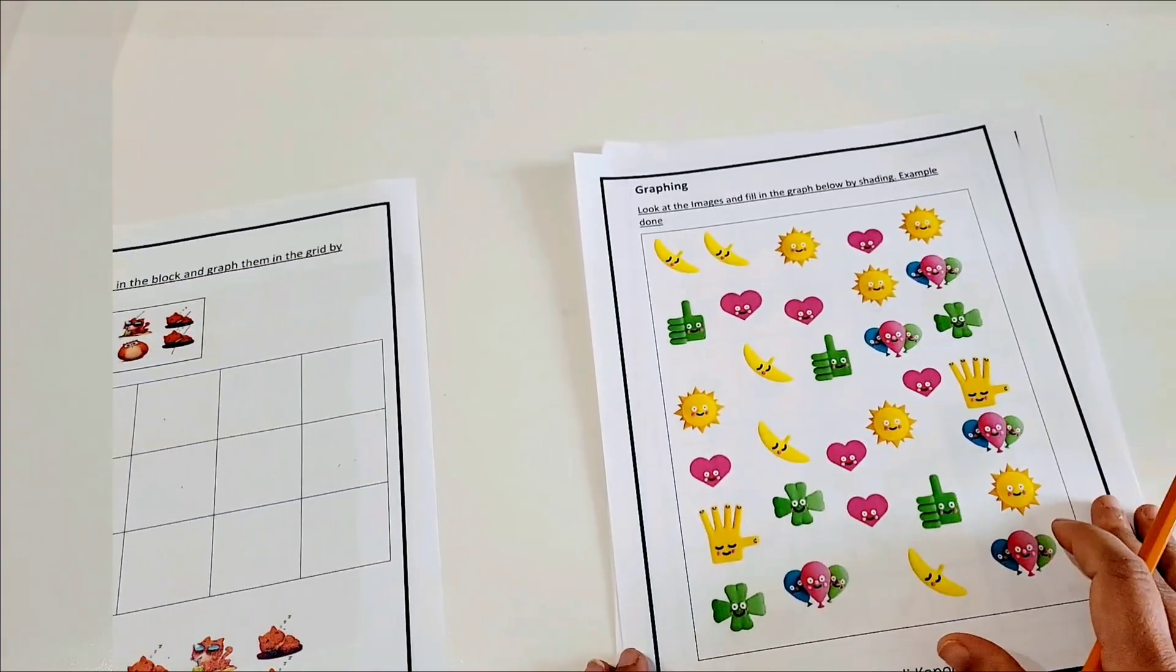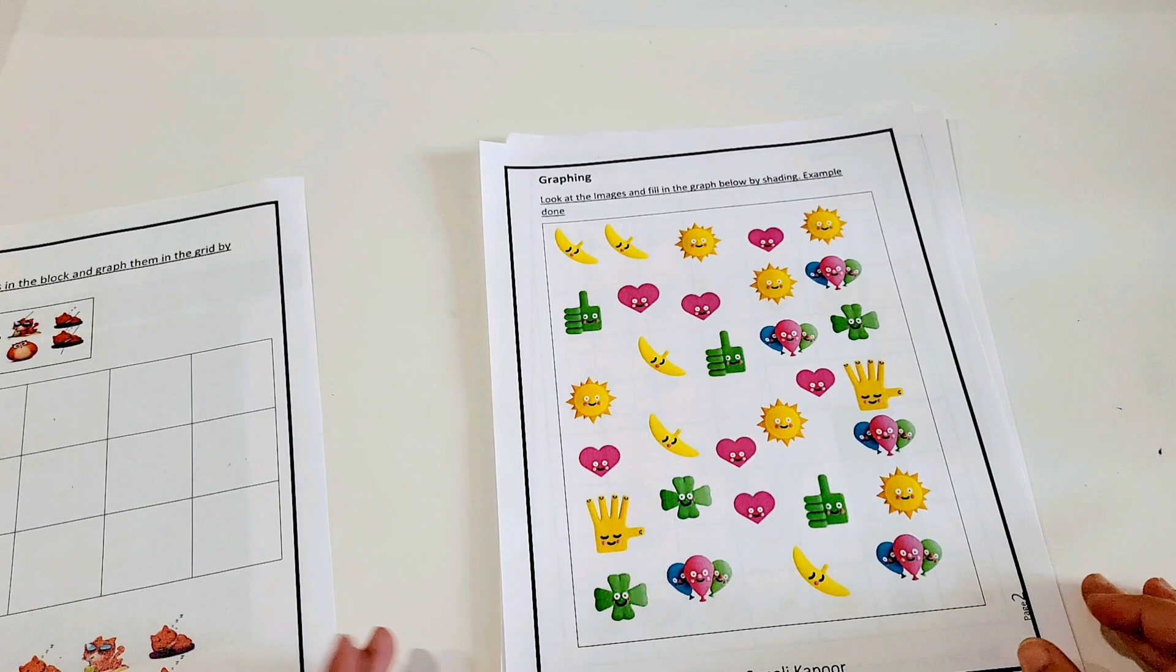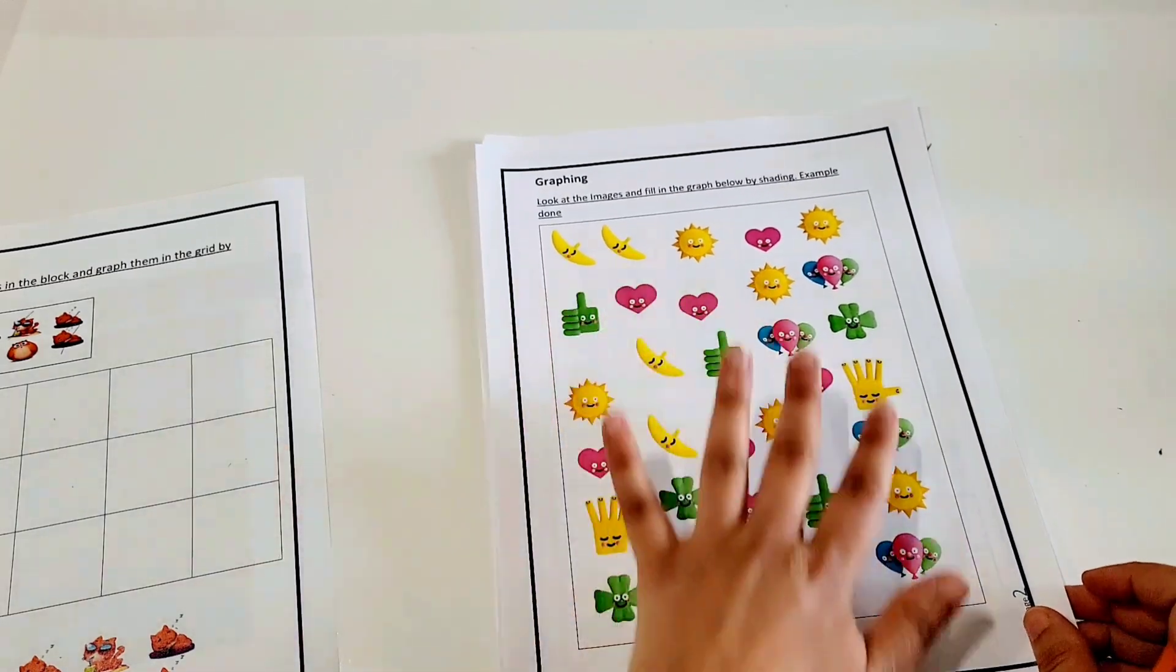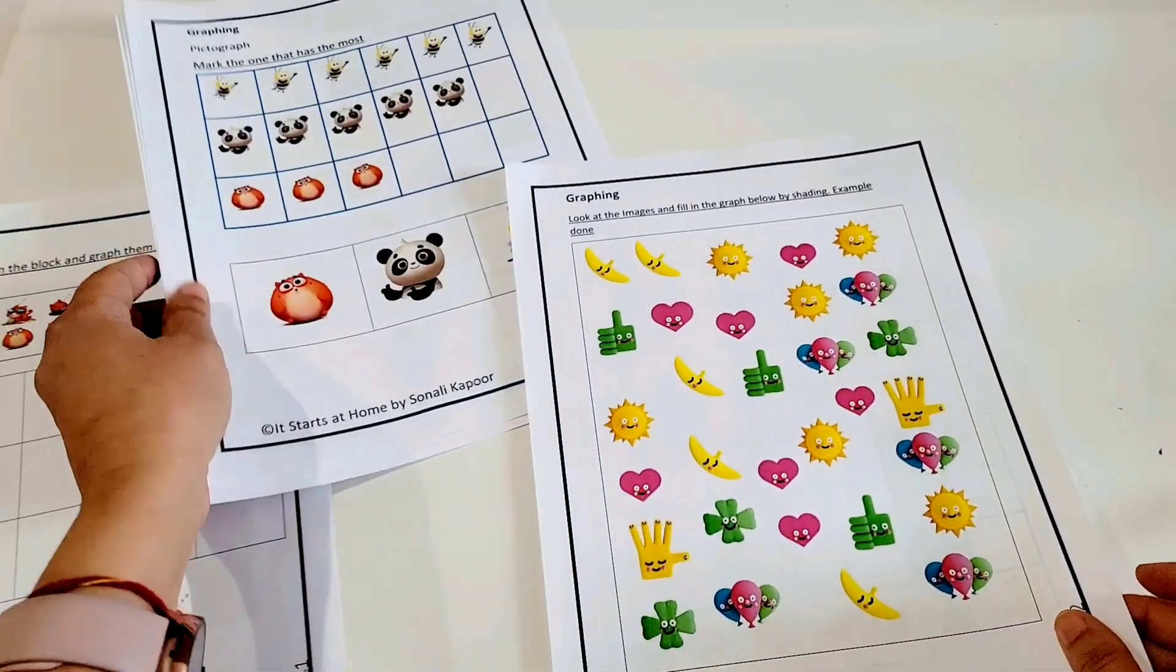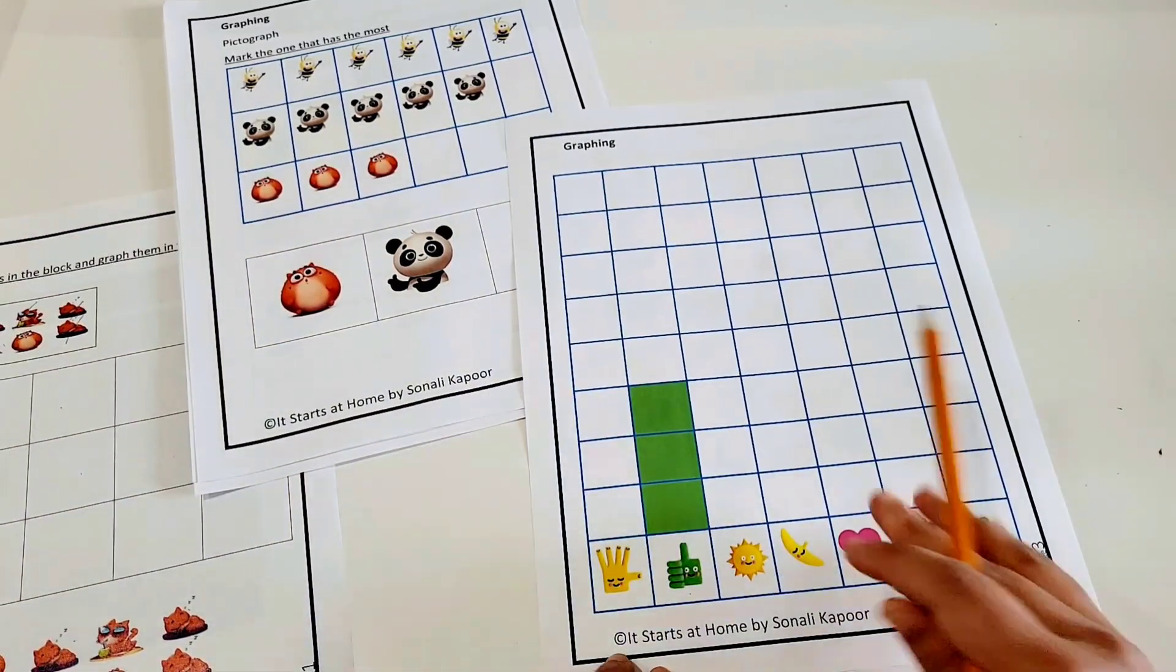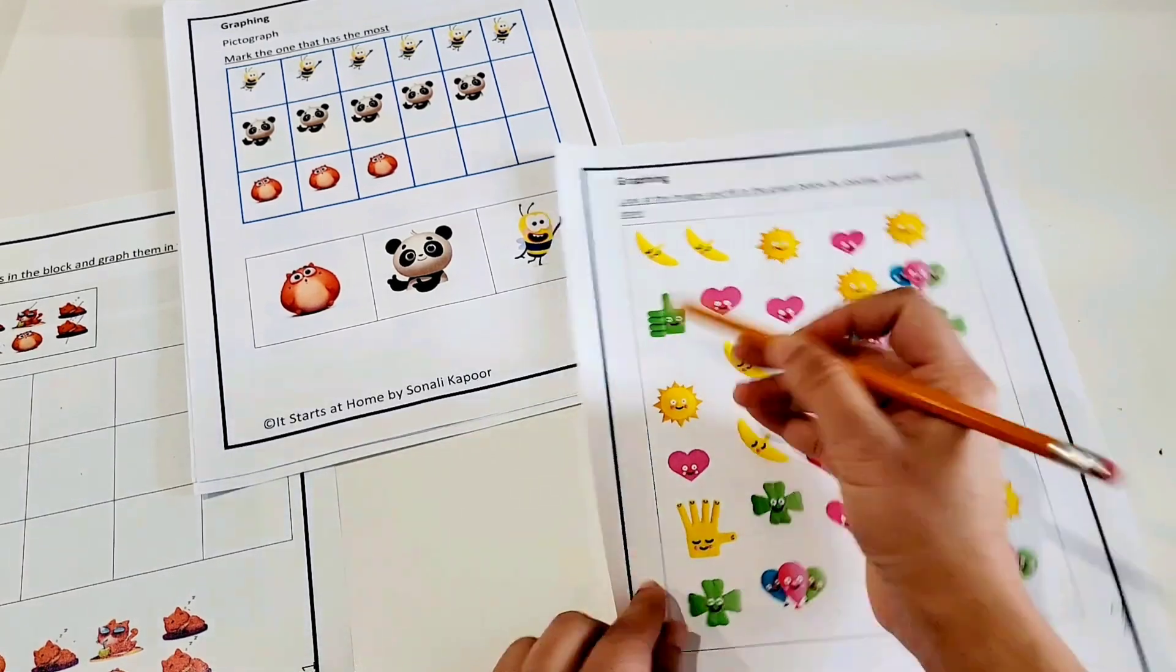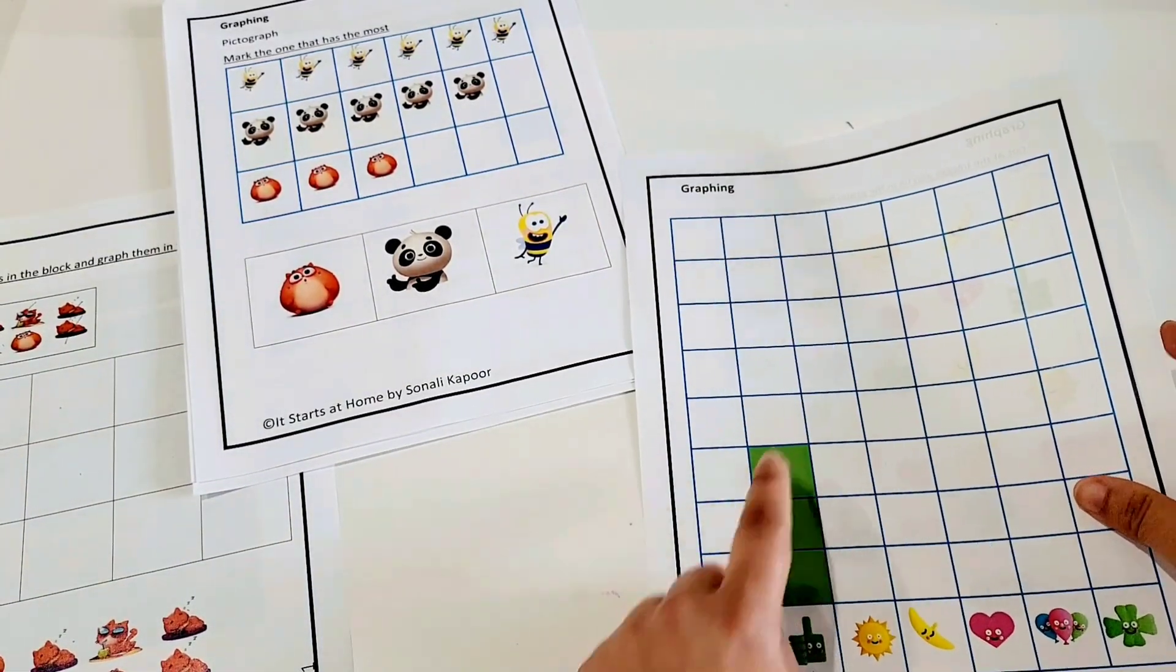The second activity is look at the images, fill in the graph below by shading. One example is done. So the child has to look at these images that you see right here, and then this is the graph. So the hand was 3 boxes: 1, 2, 3. And that's why the 3 boxes are colored.